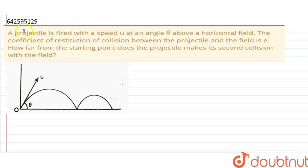Hello everyone. So the question is, a projectile is fired with speed u at an angle theta above the horizontal field. The coefficient of restitution of collision between the projectile and the field is e. How far from the starting point does the projectile make its second collision with the field?